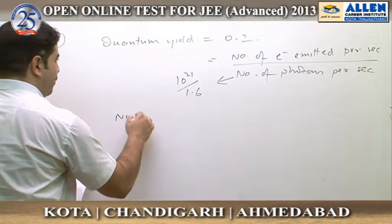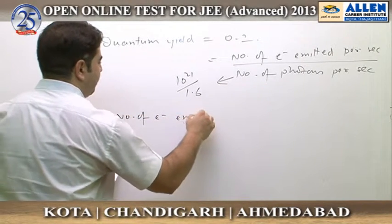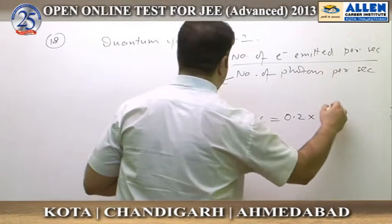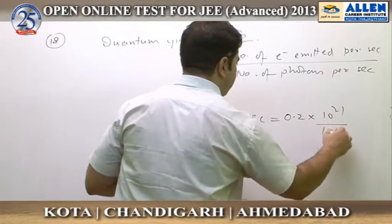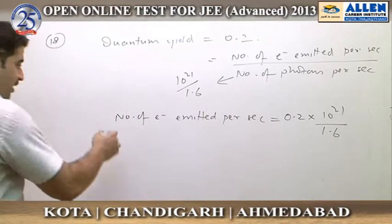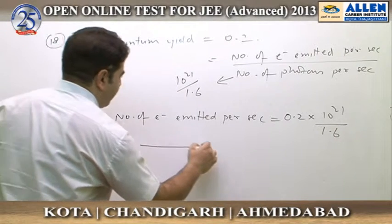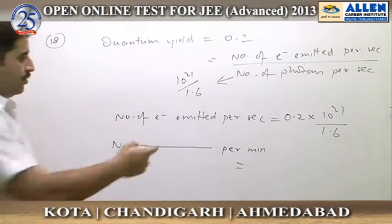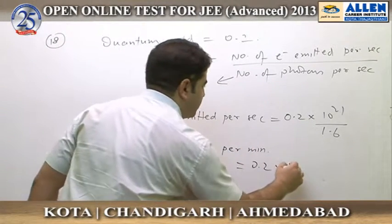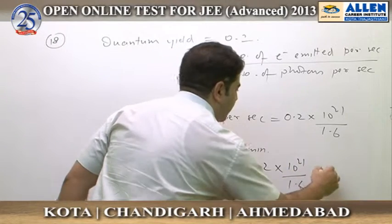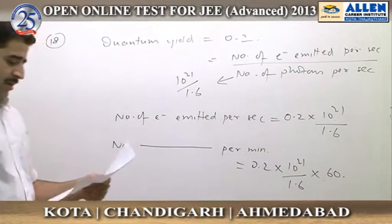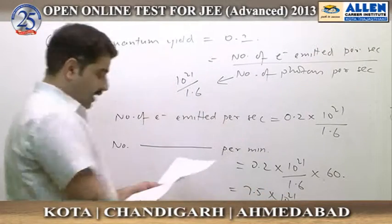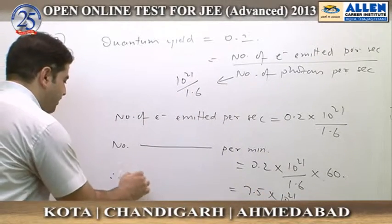Putting this value in, the number of electrons emitted per second comes out to be 0.2 times 10²¹ divided by 1.6. We then need the number of electrons emitted per minute, so we multiply by 60 seconds. This value comes out to be 7.5 × 10²¹, according to which option D is correct.